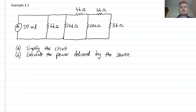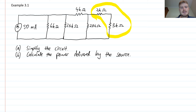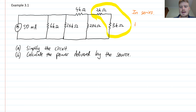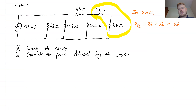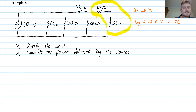The approach is to first look for parts I can simplify using those two rules. Over on the right-hand side, I recognize two resistors that are connected in series, which means I can combine them. The equivalent resistance of these will be their sum: 2k plus 3k, which is 5 kilo ohms. So I can replace that circled part with a 5 kilo ohm resistor.